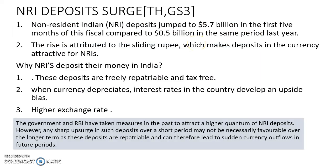NRI Deposits Surge. The non-resident Indian deposits surged from $5.7 billion in the first 5 months of this fiscal. The reason behind this is that the rupee value has slid by over 9 to 10 rupees. Whenever the rupee value depreciates, the interest rates in the country develop an upside bias. Therefore, if NRIs bring their money from outside India to inside India, they can get higher interest rates.